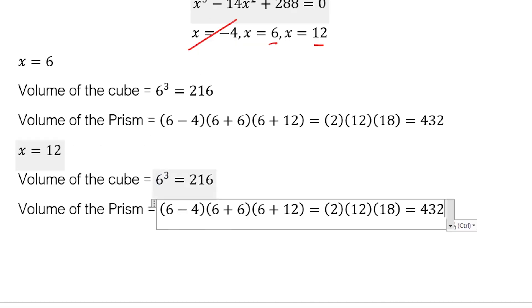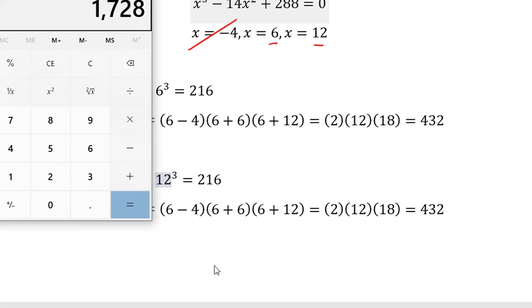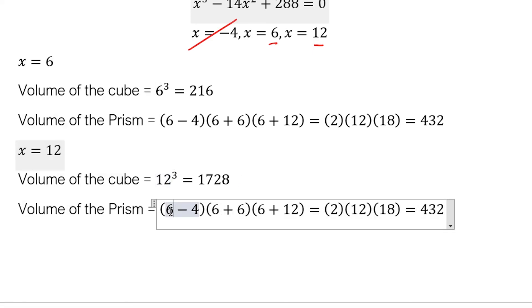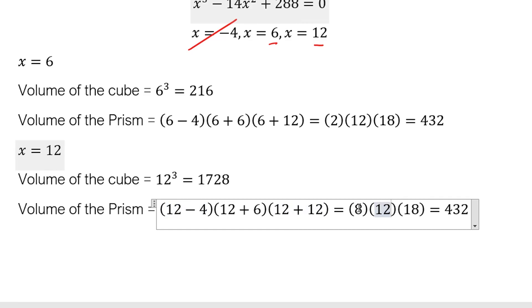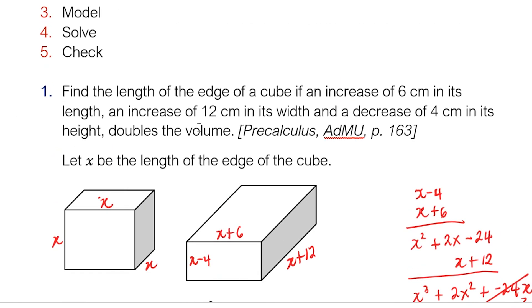Let's try x equals 12. So 12 cubed - 12 cubed is 1,728. And now let's replace 12 here. So the lengths now are 12 minus 4, which is 8, times 12 plus 6, that's 18, and 12 plus 12, that's 24. Let's check. 8 times 18 times 24, that's 3,456. Let's see whether this volume here is twice of this. 1,728 times 2 - yes, it's 3,456. So therefore, let's go back. The question here is find the length of the edge of the cube. So therefore, we have two solutions. We have x equals 6 and x equals 12.